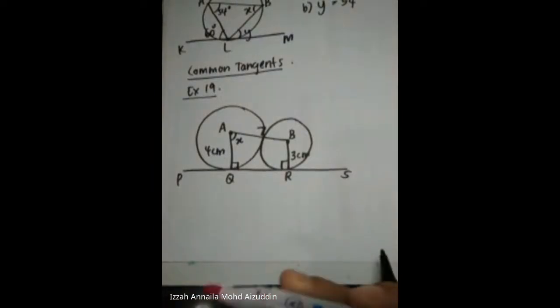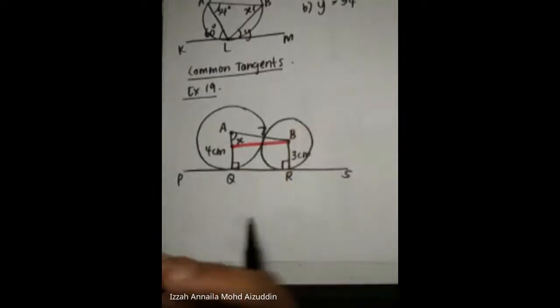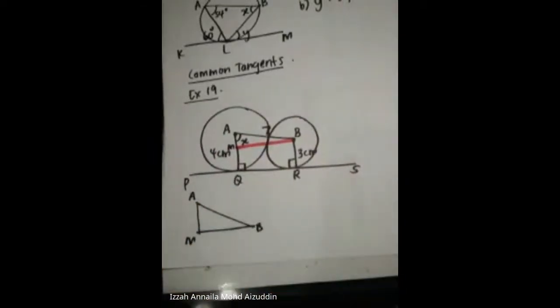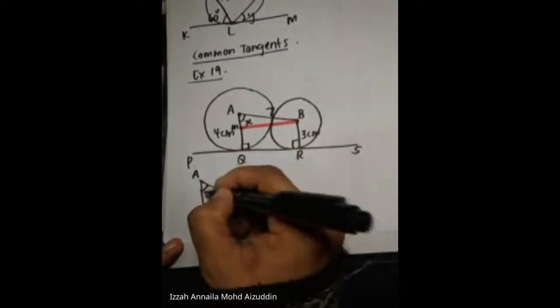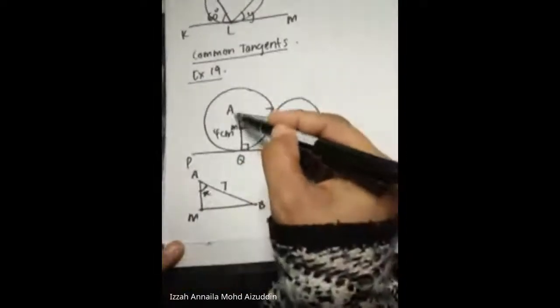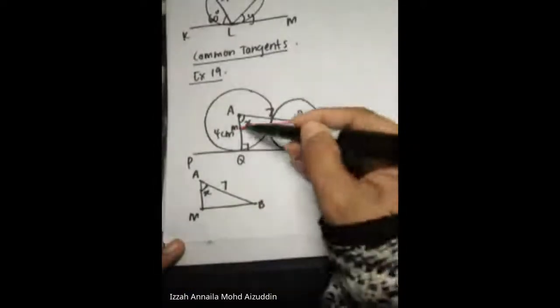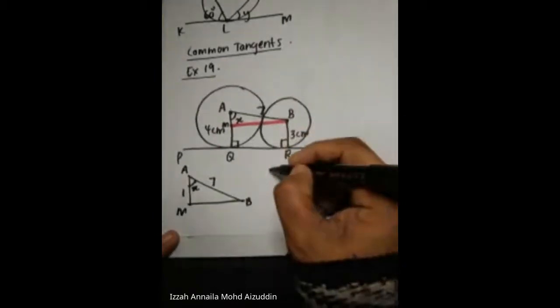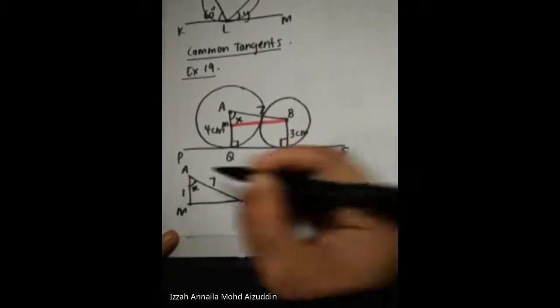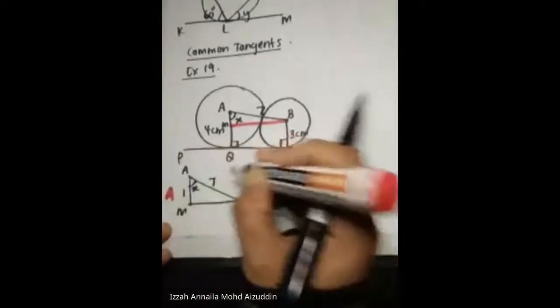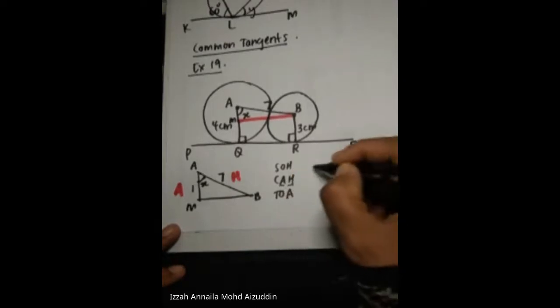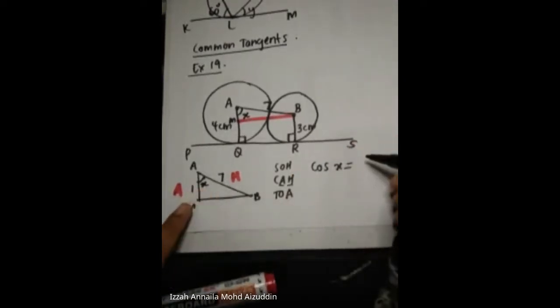We draw a triangle inside the trapezium. Let's say point M. The triangle is M, A, B — with AB equal to 7. AQ is 4, BS is 3, and MQ is also 3, so AM equals 4 minus 3 equals 1. We can use trigonometry: this side is adjacent and AB is the hypotenuse. So cos X equals 1 over 7.